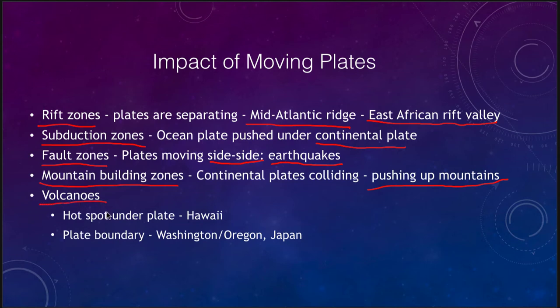Volcanoes can occur often on a plate boundary, as in the Ring of Fire, which includes volcanoes in Washington, Oregon, and Japan. We can also get hotspot volcanoes, like Hawaii, which are in the middle of a plate — just a weak spot in the plate where material is welling up from below.